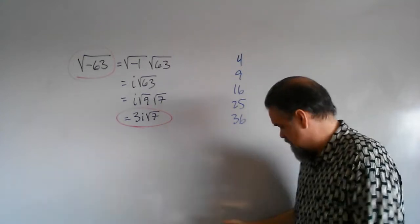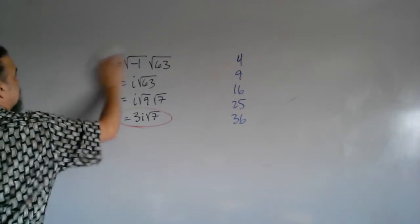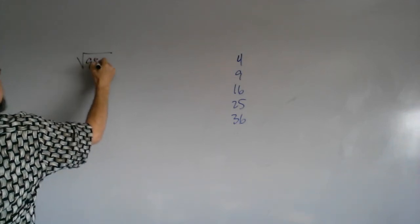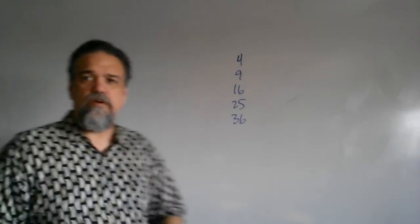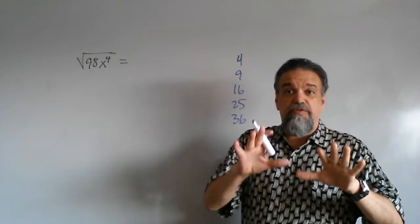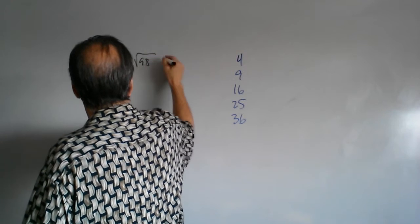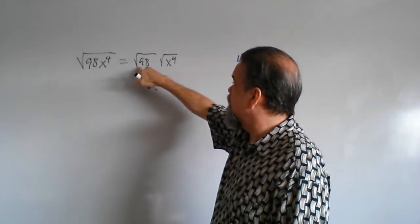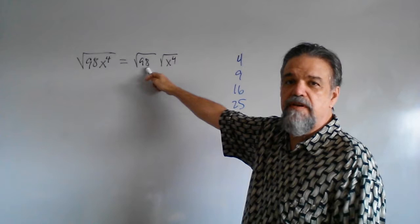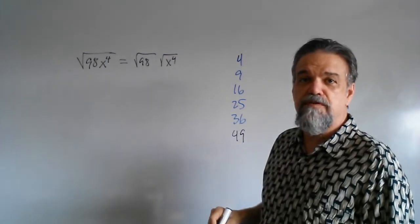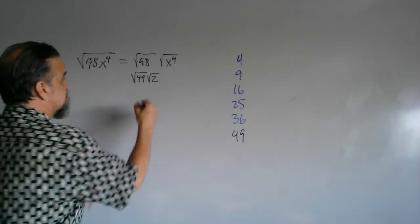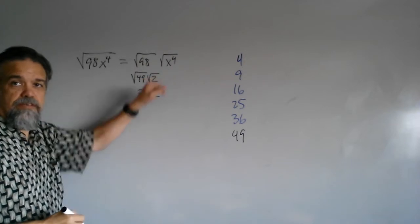Let's take another one, except this time let's make it a little more challenging. Let's take a number that has a variable inside it — a root with a variable in it. So this is the square root of 98 times x to the fourth. Let's just deal with the number part first. This is going to be the square root of 98 times the square root of x to the fourth. I'm separating my number from my variable. 98 — if I cut that in half, I get 49, and 49 is a perfect square. It's 7 squared. So that means this is going to be the square root of 49 times the square root of 2, which is 7 root 2. That's the number part.